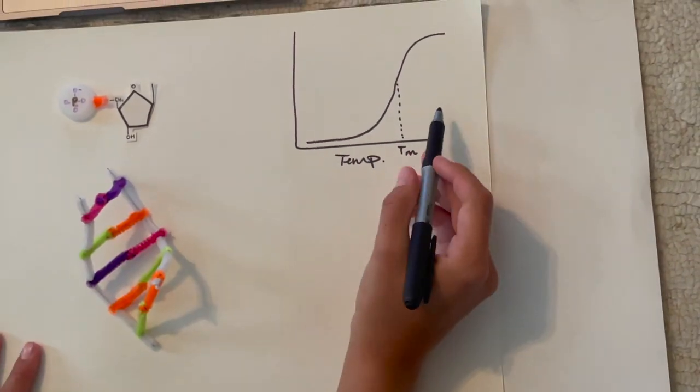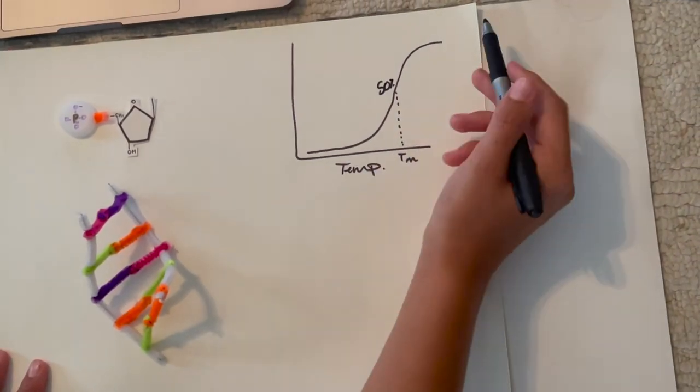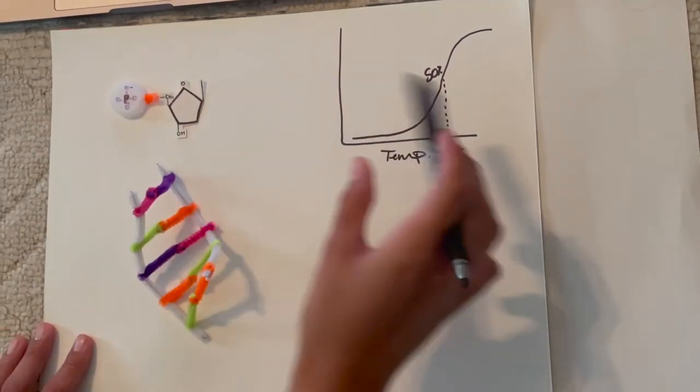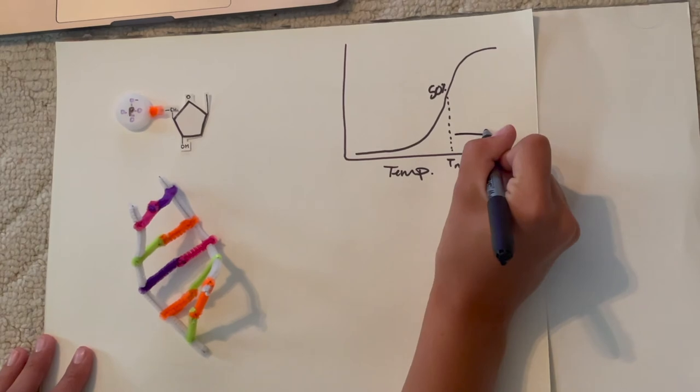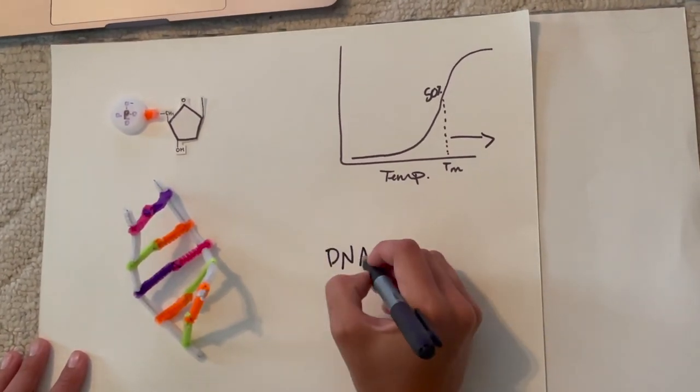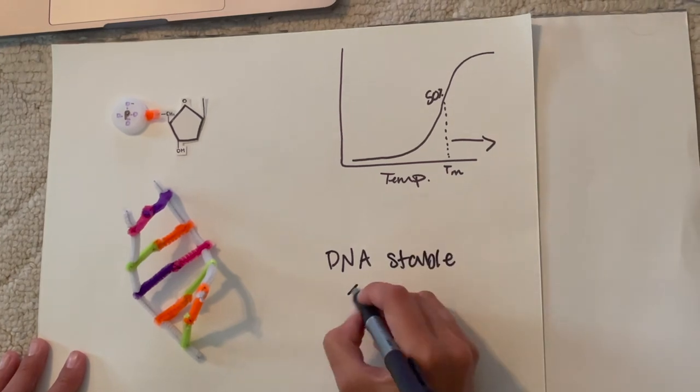This is a DNA melting curve, so as the temperature increases, the DNA denatures more. But since that sodium buffer would be present, it would make this denaturation point further. So the DNA is more stable when you increase salt.